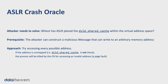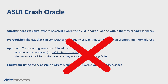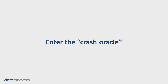One way the attacker might approach this is to try accessing every possible address in the address space. The rationale is that if the address is not mapped — meaning the shared cache is not there — the process will be automatically killed by the operating system because it tried to access an invalid address, i.e., a page fault or paging violation. Unfortunately, the 64-bit virtual address space is really, really large, so this would take unfeasibly long. The attacker needs a clever technique to narrow down the range much more quickly, and this is where the crash oracle technique comes in.